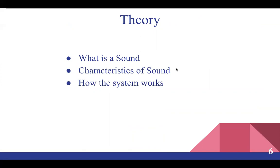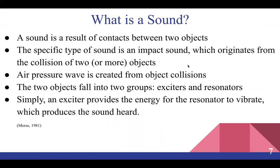The theory of ball on a membrane covers the sound characteristics and how the system actually works. A sound is a result of contact between two objects. The specific type of sound in the ball on a membrane experiment is an impact sound, which actually originates from the collision of two or more objects. In this investigation, this is simply two objects. Air pressure waves are created from the object collisions, and these collisions essentially cause vibrations.